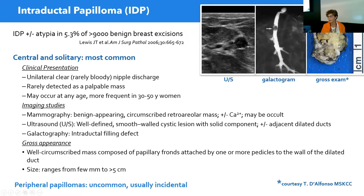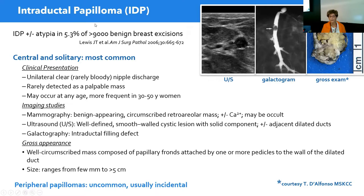Central solitary intraductal papillomas come to clinical presentation because of clear or rarely bloody nipple discharge, or a palpable mass. They can occur at any age but tend to be more frequent in premenopausal women between age 30 to 50. The best imaging modality is ultrasound, which highlights the cystic space partially filled by the papillary mass and sometimes dilated ducts. On galactogram the papilloma appears as a negative image. Gross appearance is cauliflower-like, inserted along the duct wall by a broad stalk. Size ranges from a few millimeters to over 5 centimeters.